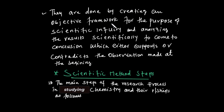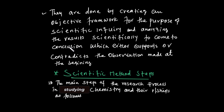The scientific method works by creating an objective framework for the factors of scientific inquiry. Scientists analyze results scientifically — you make observations, then analyze the results, which either support or contradict the observations made at the beginning.